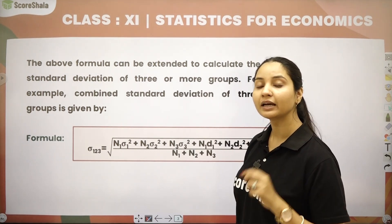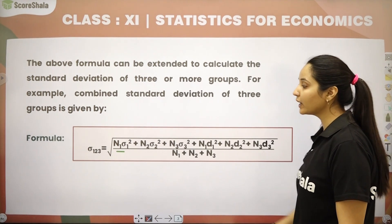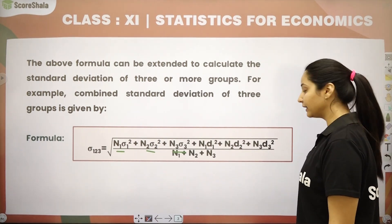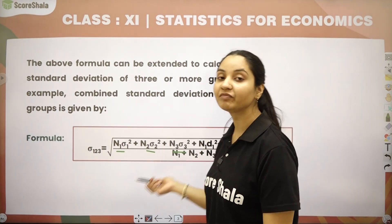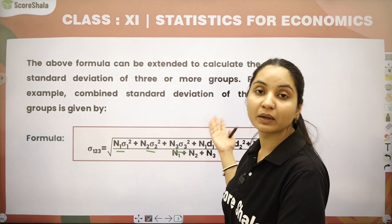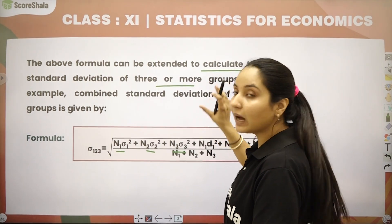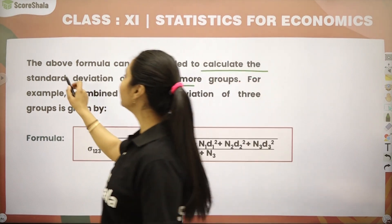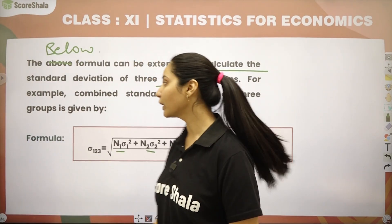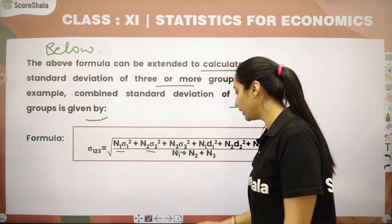Now, what if you have three series? If you have to find the combined standard deviation, it is simple — the format is the same. You extend it: N₁σ₁² + N₂σ₂² + N₃σ₃² + N₁D₁² + N₂D₂² + N₃D₃², all upon N₁ + N₂ + N₃. As many series as there are, there is no problem — the format remains the same. The above formula can be extended to calculate the standard deviation of three or more groups.